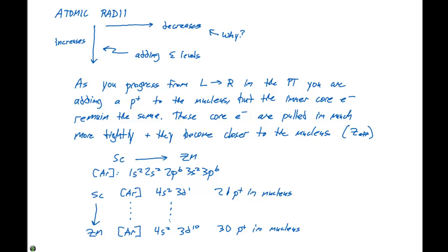So these 30 protons are acting on the same number of electrons in the inner core electrons of our argon core, versus the 21 protons that are acting on the argon noble gas core. So as we progress from 21 protons to 30 protons, the effective nuclear charge increases.